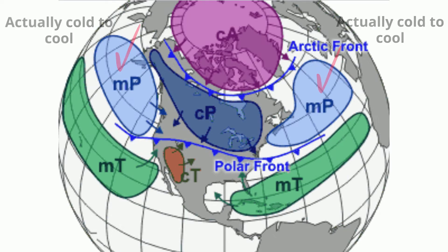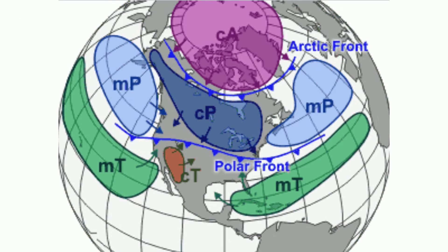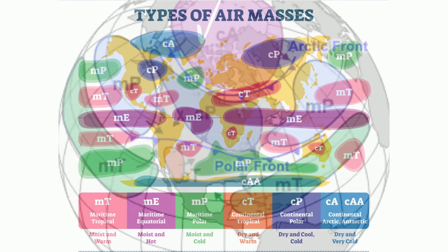A couple more examples. A lowercase c, capital A will be a dry, very cold mass of air formed over land — that's continental — and it's arctic, so it's very cold.